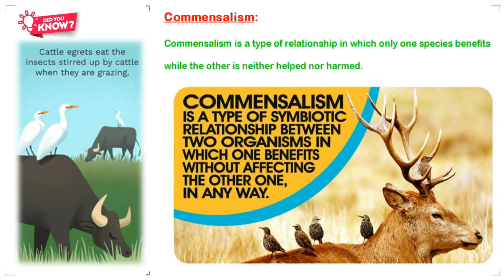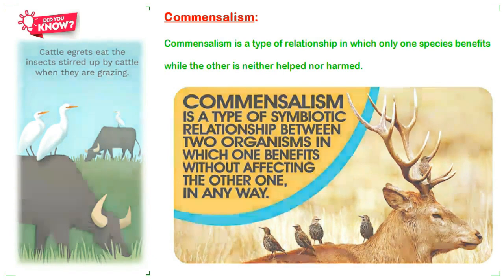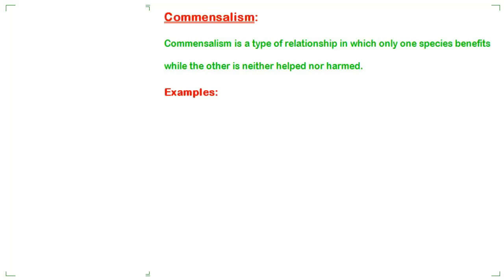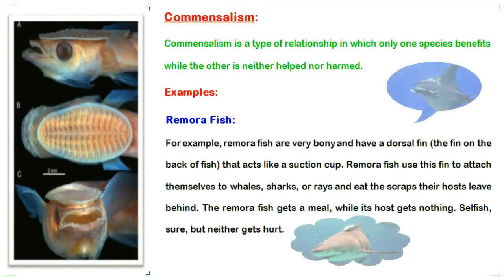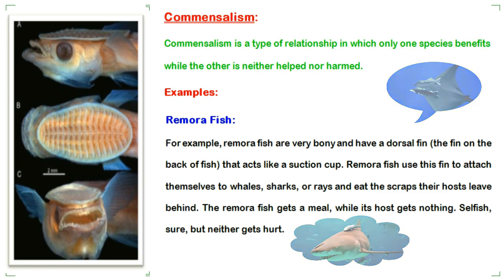Commensalism is a type of relationship in which only one species benefits while the other is neither helped nor harmed. For example, remora fish are very bony and have a dorsal fin that acts like a suction cup. Remora fish use this fin to attach themselves to whales, sharks, or rays, and eat the scraps their hosts leave behind. The remora fish gets a meal while its host gets nothing — selfish, but neither gets hurt.